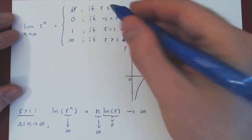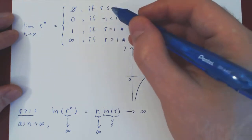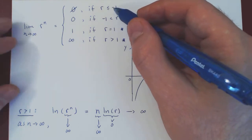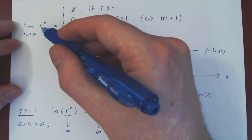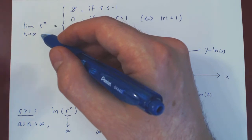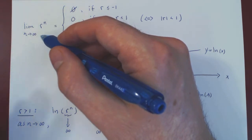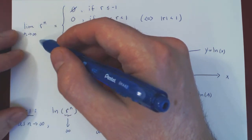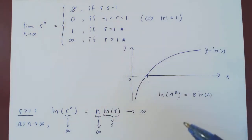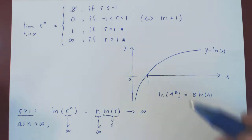When r equals negative 1, this is also rather trivial. Negative 1 to the n gives, starting at n equals 1: negative 1, 1, negative 1, 1 — it oscillates forever between negative 1 and 1. So this sequence clearly diverges, as it is not approaching a fixed real value.